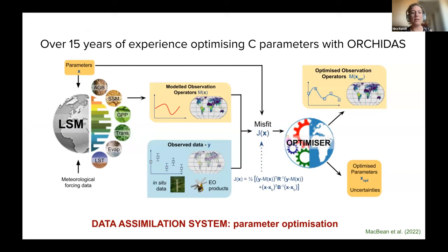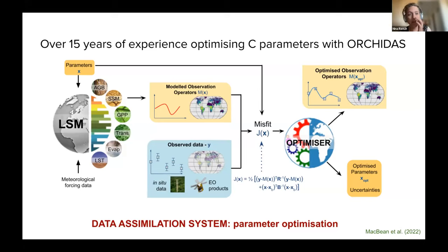We do this using a cost function and then have different ways of minimizing it. Elodie talked about gradient descent, genetic algorithms — and we're going to be using a gradient-based descent method in this talk.